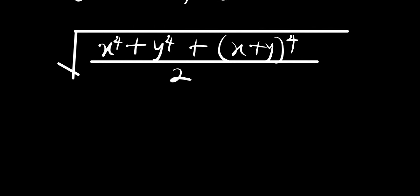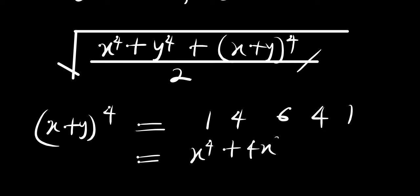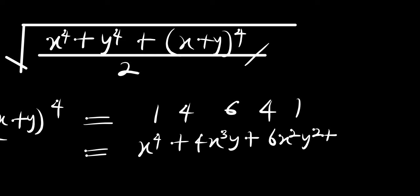So what next can we do? Let's work with (x plus y) raised to the power of 4. We can make use of Pascal's triangle — we have 1, 4, 6, 4, 1 — so this simply means we are going to have x power 4 plus 4x cubed times y plus 6x squared times y squared plus 4x times y power 3, then plus y power 4.